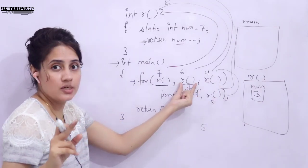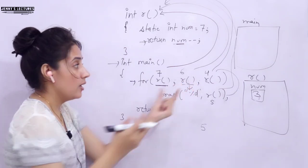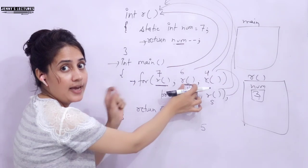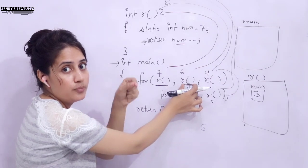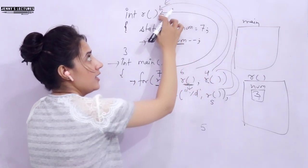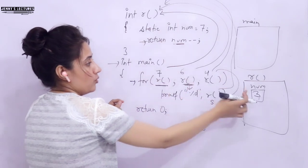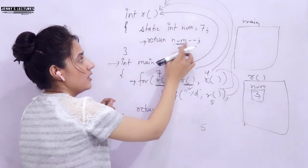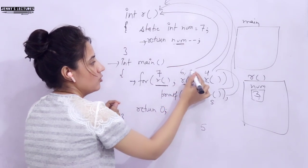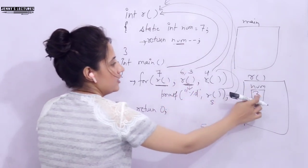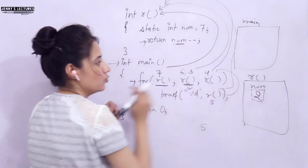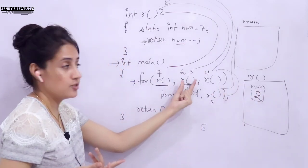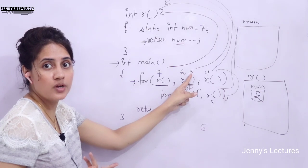After the increment/decrement part, control goes back to check the condition again. The function r is called once more — num holds 3, returns 3, then num becomes 2. The condition value is 3, which is non-zero, so the condition is true and we enter the loop body again.